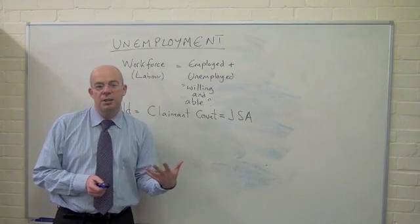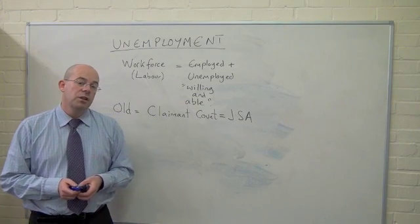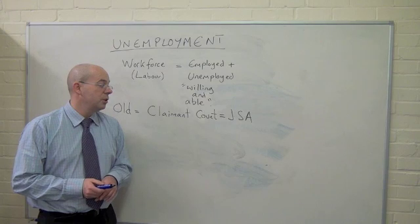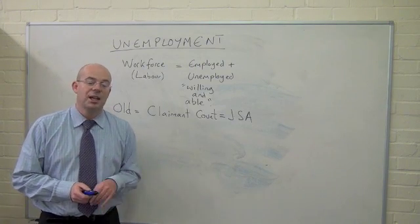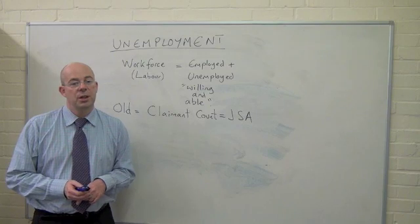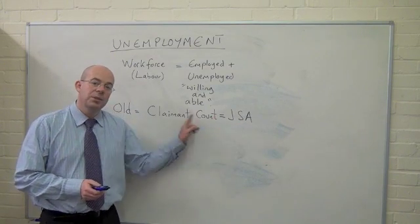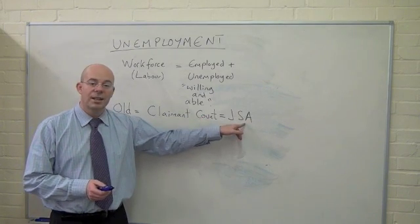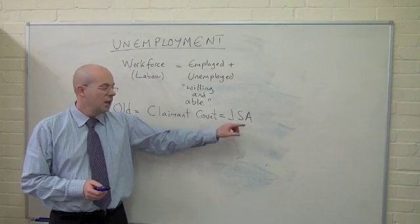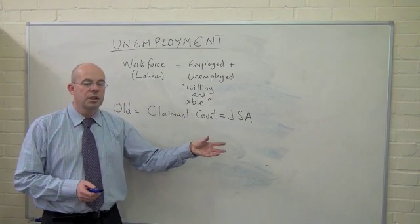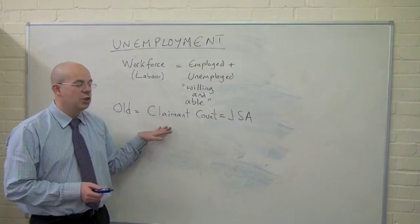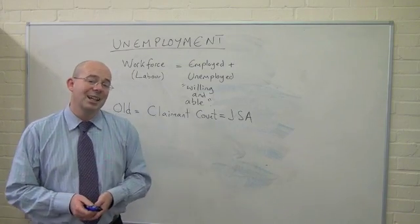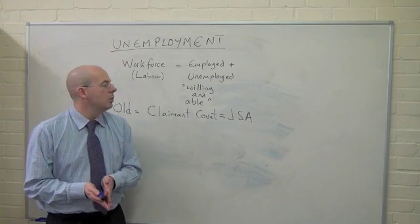To claim Jobseeker's Allowance, you would have to regularly sign on and prove that you've been willing to do work. If you've been doing a voluntary job of more than 16 hours a week, or part-time education of more than 16 hours a week, you may no longer be counted on the claimant count as unemployed. All these cuts and entitlements basically reduce the measure of the claimant count, reducing artificially the levels of unemployment, you might say.